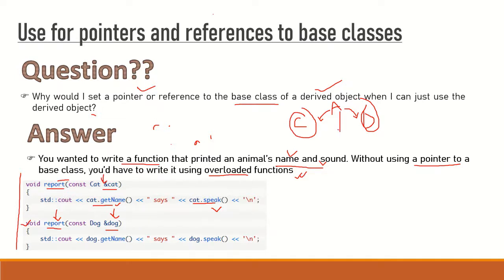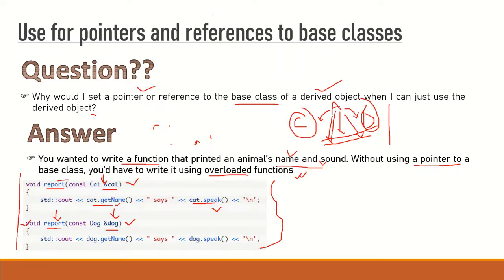But think about the scenario where we inherit 30 or 40 more animal types. If we adopt the overloaded function approach, we need to write a 'report' method for animal type 3, animal type 4, and so on for every derived class. Whenever we need to inherit a new class from animal, we need to add one more overloaded function each time — that is a time-consuming job.